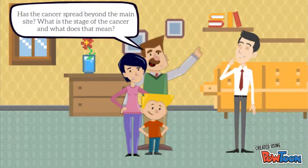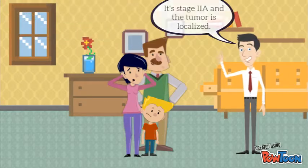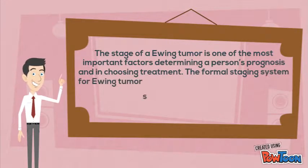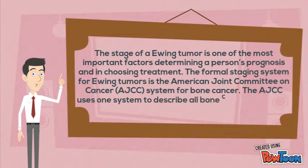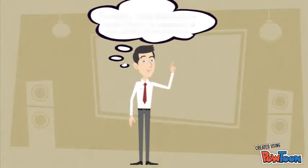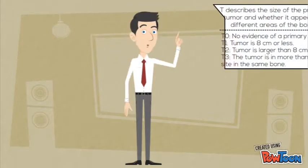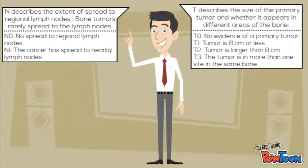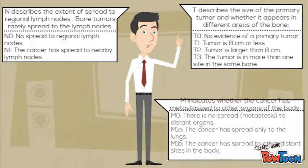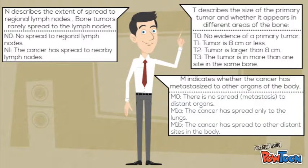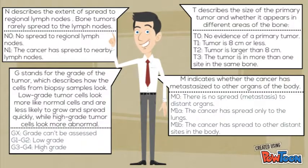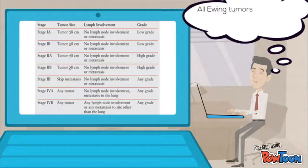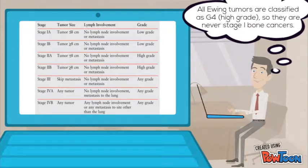What is the stage of the cancer and what does that mean? It's stage 2A and the tumor is localized. The formal staging system for Ewing tumor is the American Joint Committee on Cancer system for bone cancer, AJCC. There are four key pieces of information in the AJCC system: T describes the size of the primary tumor; N describes the extent of spread to regional lymph nodes; M indicates whether the cancer has metastasized to other organs; and G stands for the grade of the tumor. It is important to know that all Ewing tumors are classified as G4, high-grade, so they are never stage 1 bone cancer.